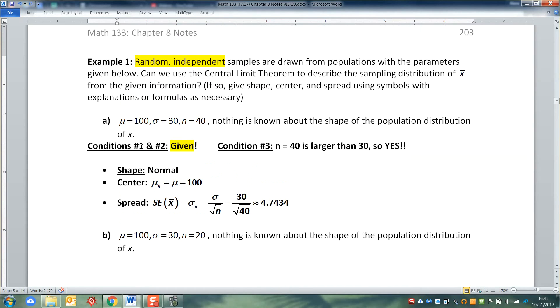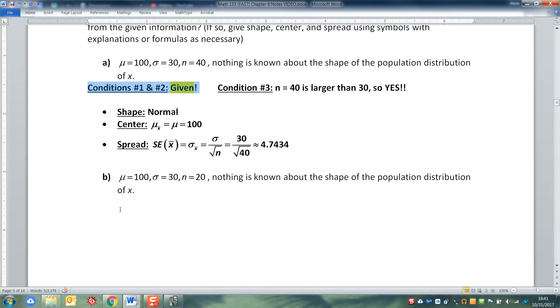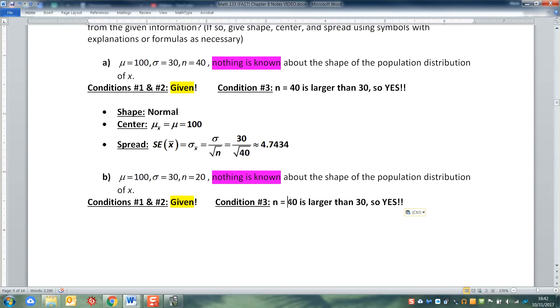Now looking at letter B, we obviously have conditions one and two. So that's no problem. That's always going to be given to us. It's for the whole problem. But condition number three, we're in trouble. And the reason we're in trouble is because we don't know the shape. See that 'nothing is known' business right there? That's a concern. So nothing is known. Well, that's all right, as long as your n is large. But our n is only 20. So n = 20 is not larger than 30.